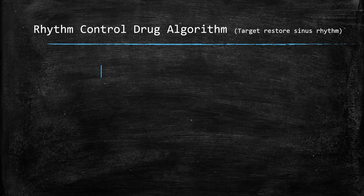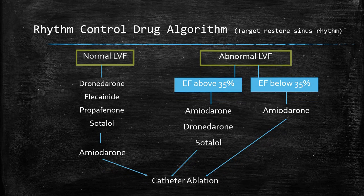Here is a rhythm control drug algorithm based on left ventricular function. With normal left ventricular function, patients can use dronedarone, flecainide, propafenone, and sotalol. Failure to resolve involves use of amiodarone, followed by catheter ablation. With abnormal left ventricular function, if the ejection fraction is above 35%, amiodarone, dronedarone, and sotalol are indicated; below 35% we would jump straight to amiodarone, succeeded by catheter ablation.